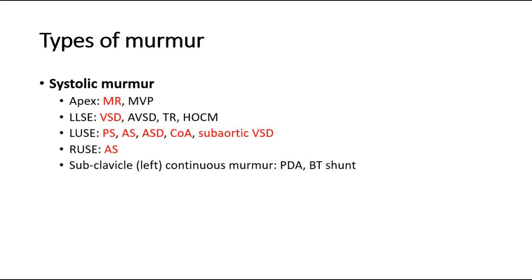There are a few types of murmur that might be heard on examination, so it can be divided into systolic murmur, diastolic murmur, and innocent murmurs. Usually in the exam, doctors will bring systolic murmur patients. For systolic murmur, it also depends on where the murmur is heard loudest. Murmurs heard loudest at the apex: the differentials can be mitral regurgitation or mitral valve prolapse. If the systolic murmur is heard loudest at the left lower sternal edge, we should think of ventricular septal defect, AVSD, tricuspid regurgitation, or HOCM.